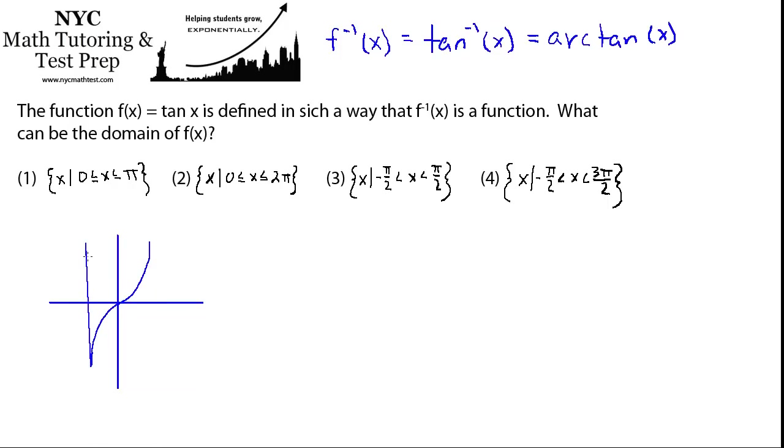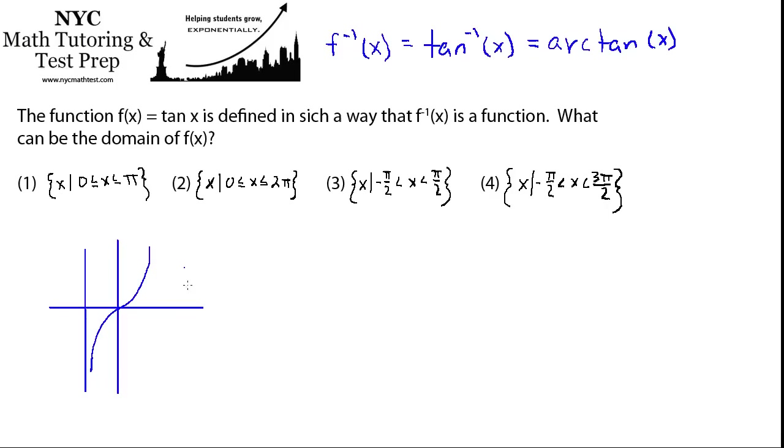Okay, and then it has an asymptote. So these lines I'm drawing are not on the graph. These are asymptote lines where the graph of the tangent approaches these lines, but doesn't ever get there. And these asymptotes are located at negative π/2 and π/2.